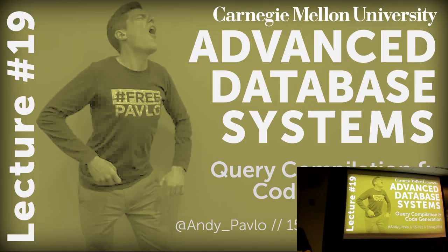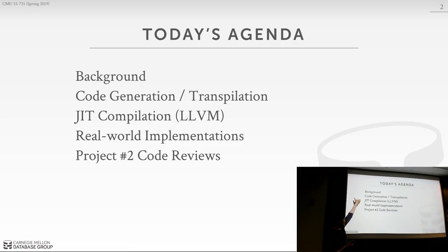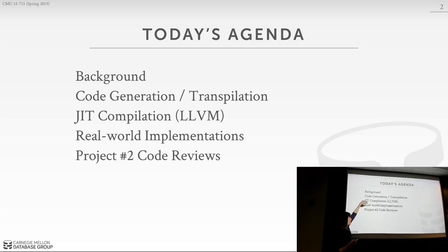Today we're going to talk about code generation and query compilation. First we'll do some background about why you want to do this, then talk about the two main techniques: transpilation or code generation — source-to-source compilation — and then JIT compilation. Then we'll spend some time talking about how real-world systems do this. If you're building a new system today, you want to do the things we're talking about in this lecture.